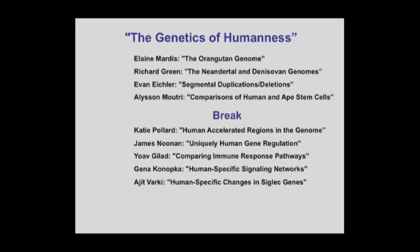With that very brief overview — obviously leaving out a lot of terminology — the program on the genetics of humanness will start at the big picture level with entire genomes, work through segments of genomes, then cover RNA, accelerated regions, gene regulation networks, and drill down to a few single gene examples. In the final closing remarks, Pascal Gagnier will put things into perspective by looking at the even bigger picture.